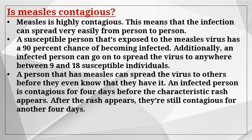Measles is highly contagious, meaning infection can spread very easily from person to person. A susceptible person exposed to the measles virus has a 90 percent chance of becoming infected. Additionally, an infected person can spread the virus to anywhere between 9 and 18 susceptible individuals. A person with measles can spread the virus to others before they even know they have it. An affected person is contagious for four days before the characteristic rash appears, and after the rash appears they are still contagious for another four days.